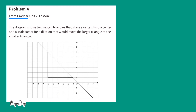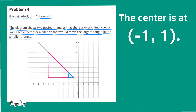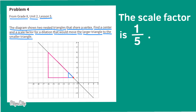Problem number 4, from 8th grade Unit 2, Lesson 5. The diagram shows two nested triangles that share a vertex. Find a center and a scale factor for a dilation that would move the larger triangle to the smaller triangle. The smaller triangle is nested inside the larger triangle, and a good center point would be coordinates negative 1, positive 1. A dilation moving from the larger triangle to the smaller triangle would have a scale factor of 1 fifth, because the smaller triangle is 5 times smaller than the larger triangle.